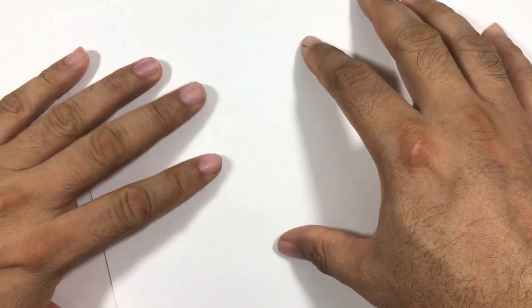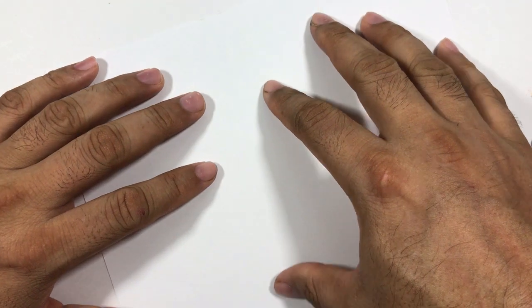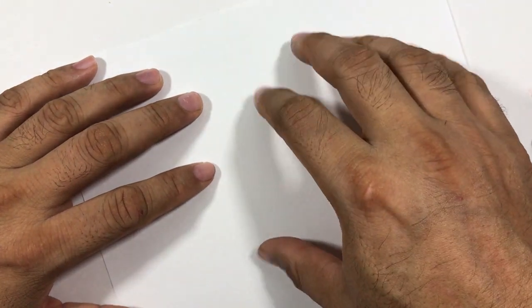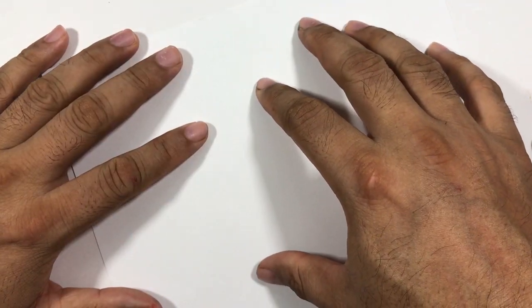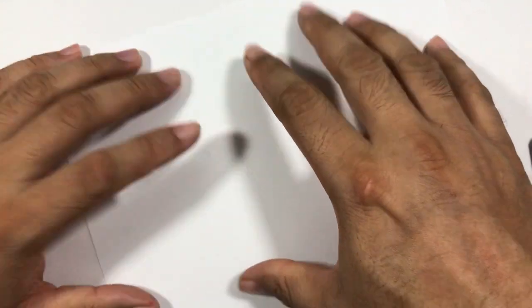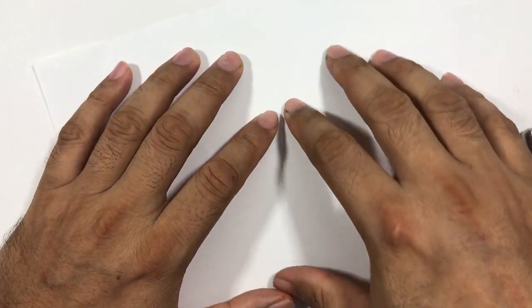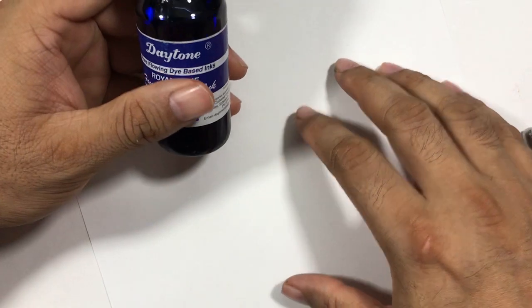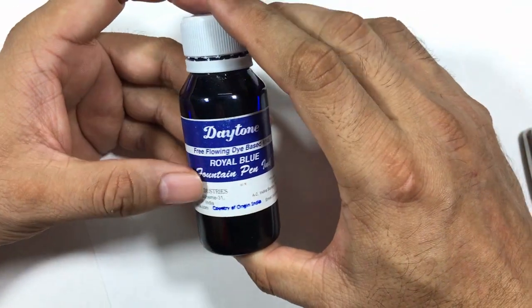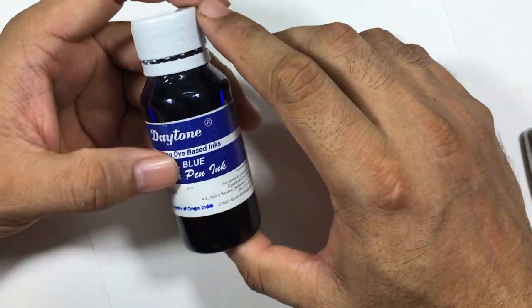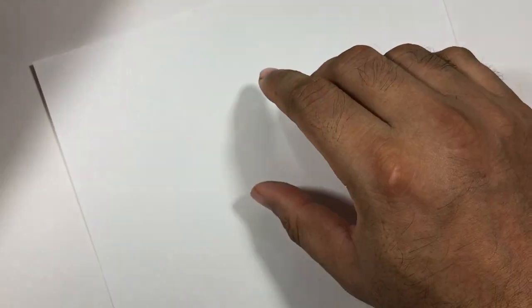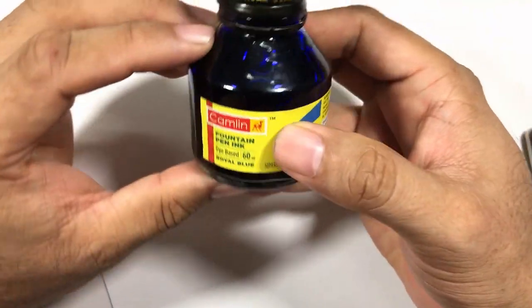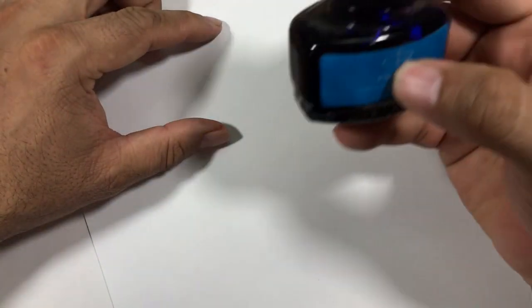Hello everybody, welcome back to the channel. Today we have another episode of Ink Splash. I'm going to compare some cheap royal blue inks that you can find in the Indian market. We have three inks here: first we have Daytone Royal Blue ink, Camlin ink, and then we have Parker Quink.